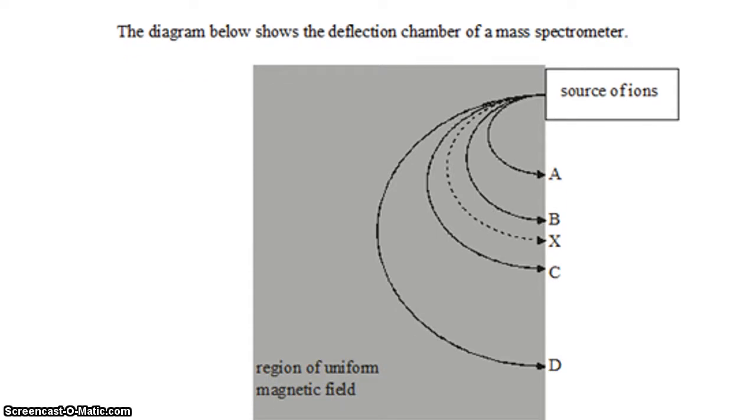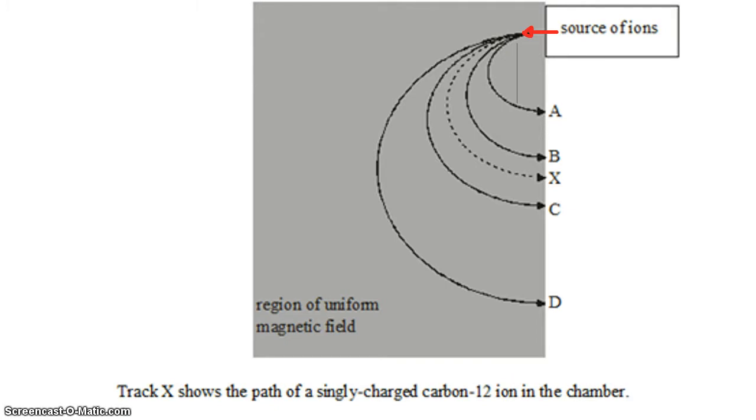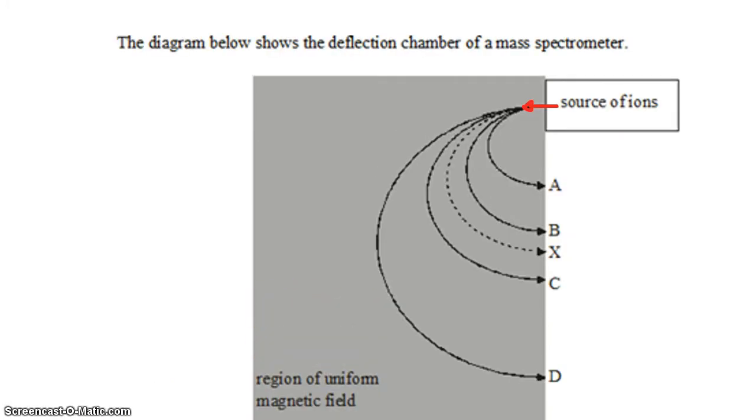What we have here is a diagram showing the deflection chamber of a mass spectrometer. We have a source of ions, so the ions are coming out of the source this way, and a bunch of different paths that those ions might take in a region of uniform magnetic field.